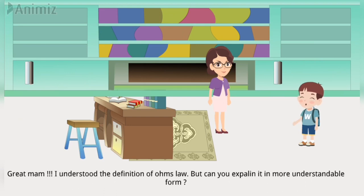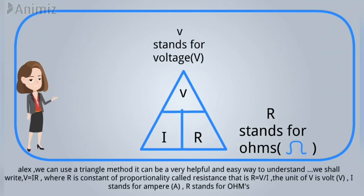Great ma'am, I understood the definition of Ohm's Law, but can you explain it in more understandable form? We can use a triangle method, it can be very helpful and easy way to understand. We shall write V is equal to IR, where R is the constant of proportionality called resistance.